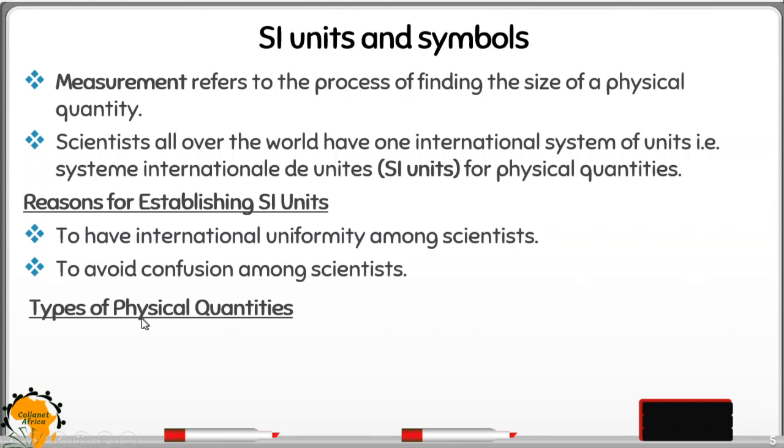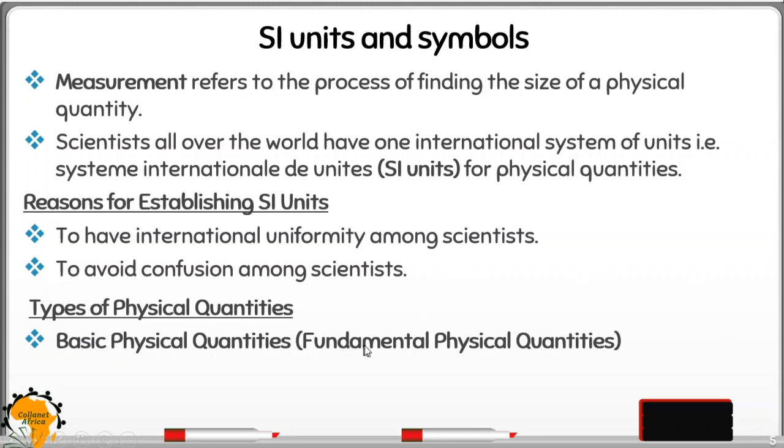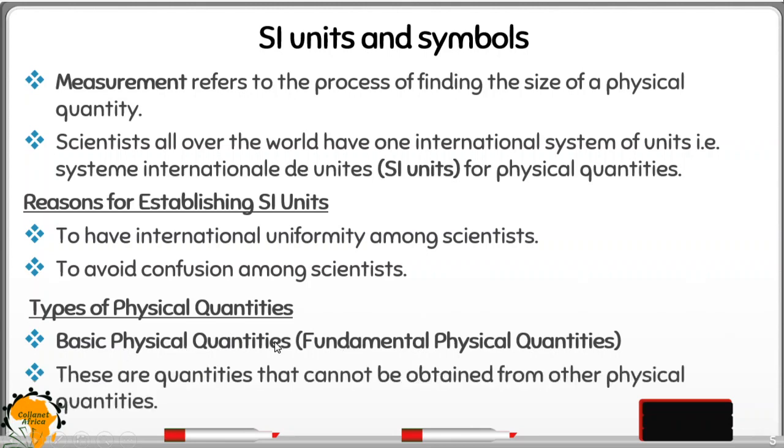We have two types of physical quantities. First, we have basic physical quantities, or what we call fundamental physical quantities. These are quantities that cannot be obtained from other physical quantities; you have to measure them using measuring instruments.